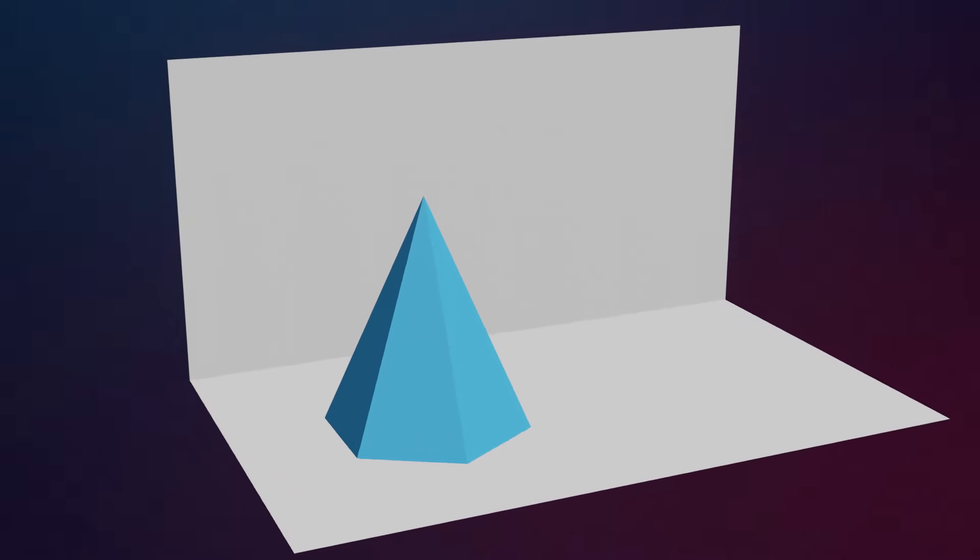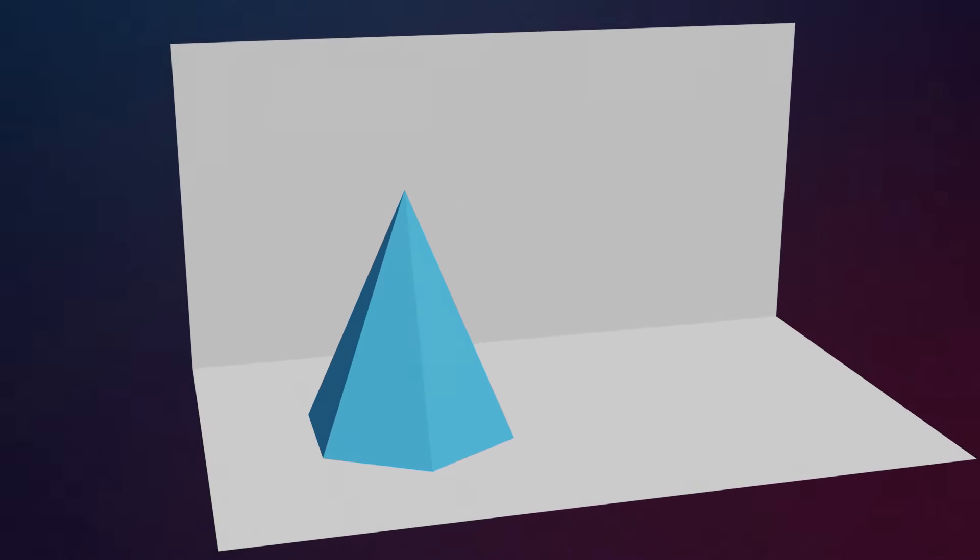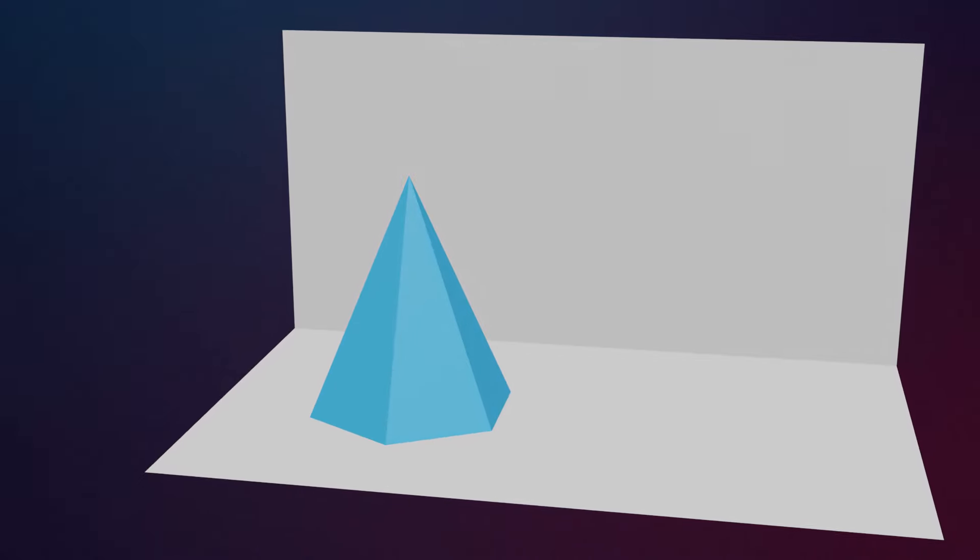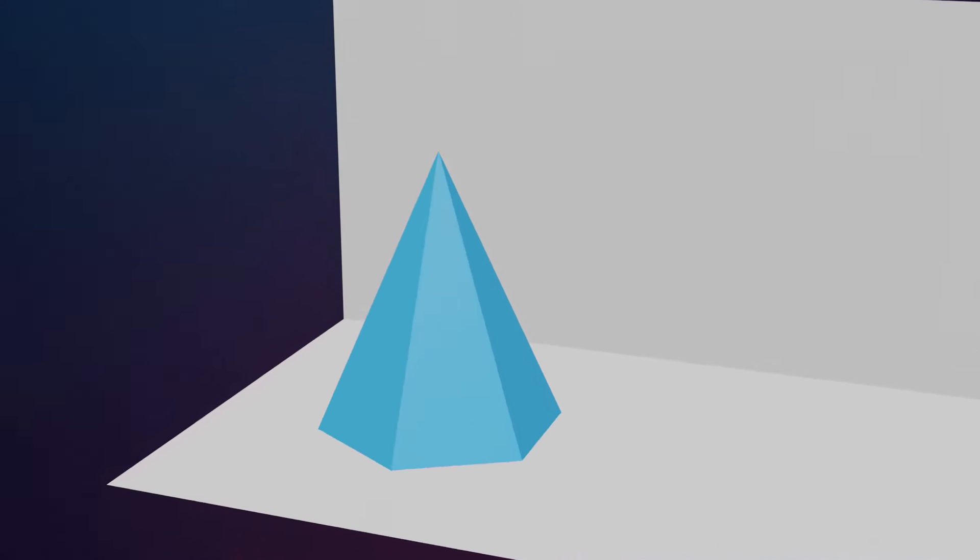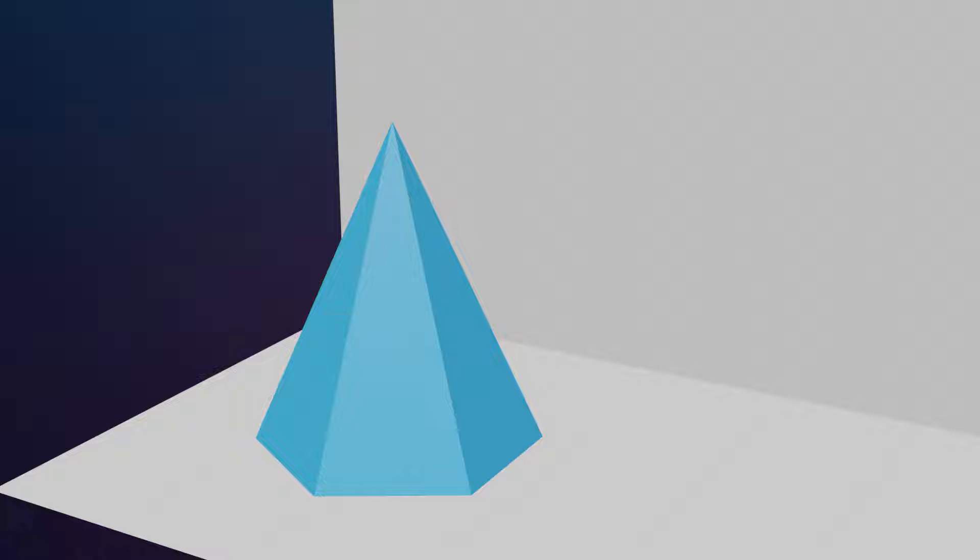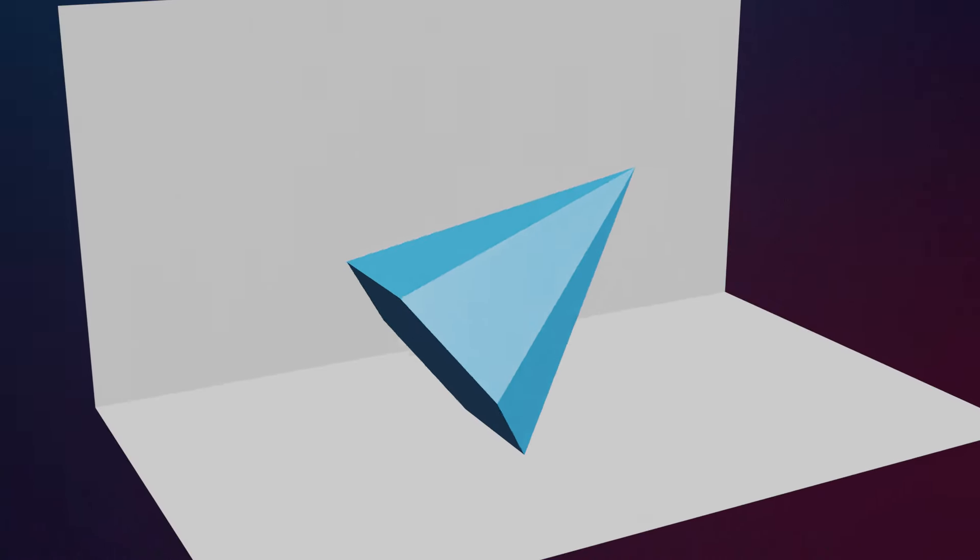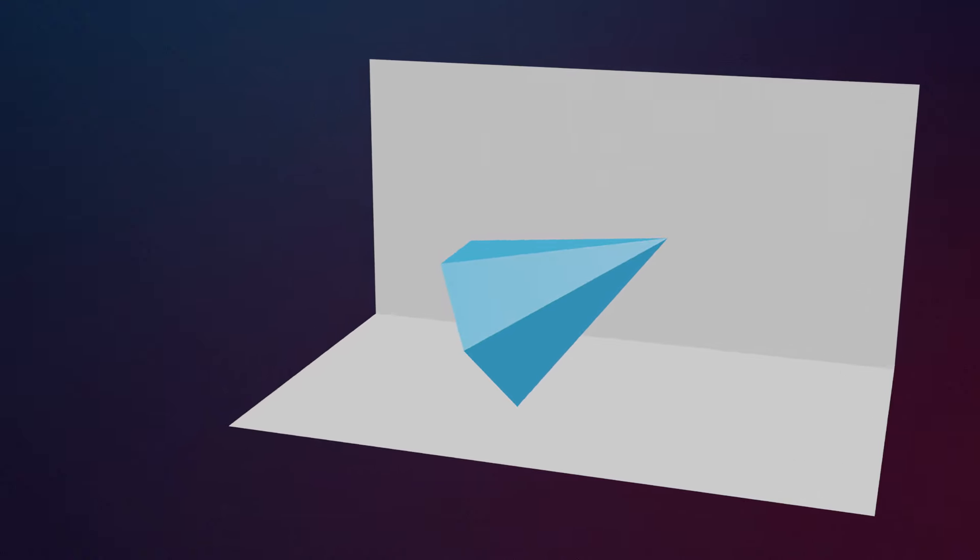A hexagonal pyramid of base 25mm side and axis 50mm long has an edge of its base on the ground. Its axis is inclined at 30 degrees to the ground and parallel to the VP. Draw the projections.